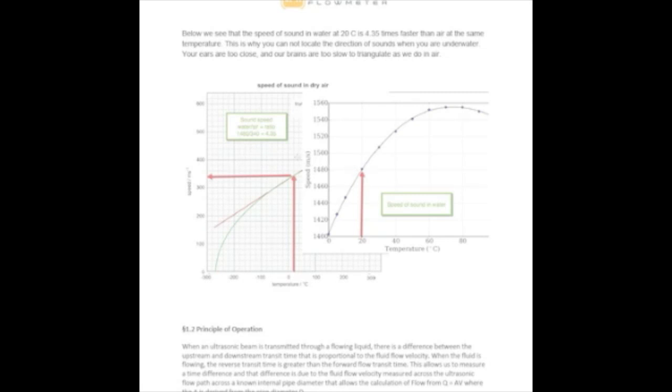1,480 meters per second versus 340. That's why when we're underwater and somebody taps their scuba tank, we can't tell which direction they are. Our ears are not far enough apart. Our brains are too slow to determine where they are.